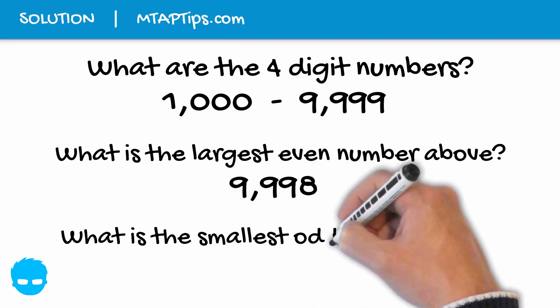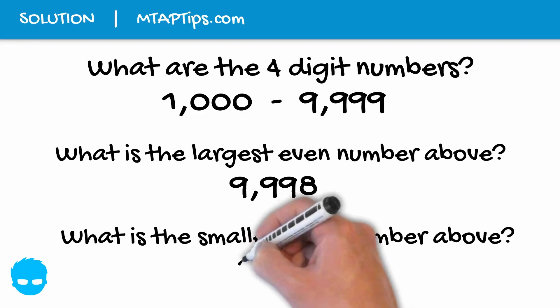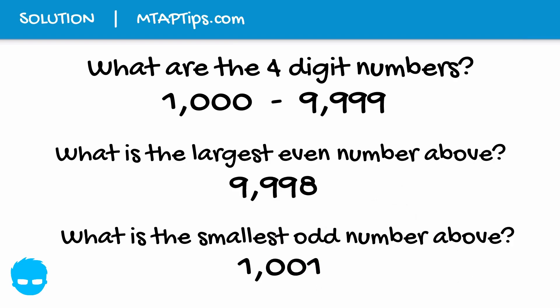Now what is the smallest odd 4-digit number? We know that 1,000 is the smallest 4-digit number, but 1,000 is not an odd number because it ends with 0. So we just have to add 1 and we'll have 1,001, which is now an odd number.